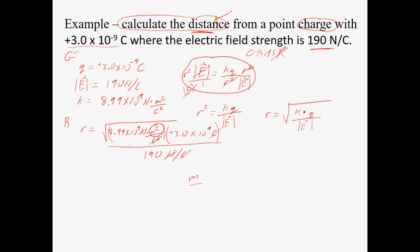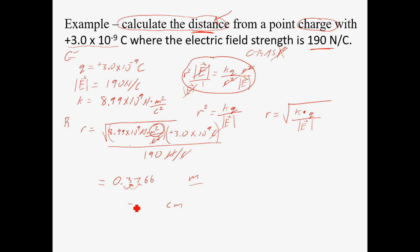Now it's just a matter of plugging all of this into your calculator. Don't forget to take the square root at the end, and what we get for an answer is 0.3766 meters, or if you're asked in centimeters, move the decimal over to get 37.7 centimeters.